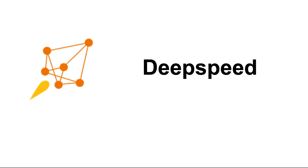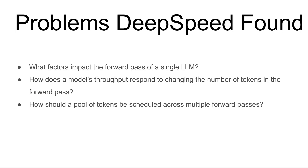In this video we're going to talk about DeepSpeed. We'll cover what DeepSpeed is, how useful it is in inference, how it works, and whether it's better than vLLM for model inference. Let's start with the three problems DeepSpeed found in existing inference systems: what factors impact the forward pass of a single large language model, how model throughput responds to changing the number of tokens in the forward pass, and how a pool of tokens should be scheduled across multiple forward passes.